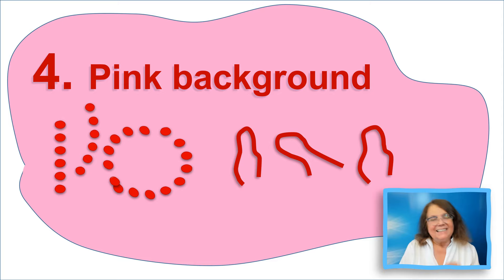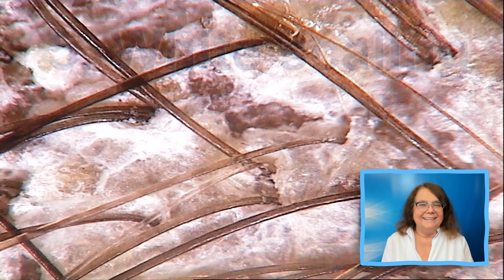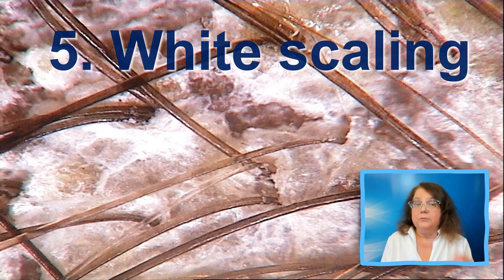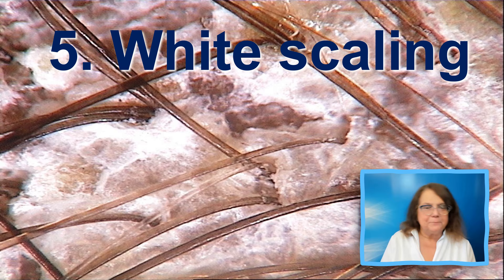Number four: the pink background. Unlike many other inflammatory diseases of the scalp, in psoriasis the background is almost always pink in color. Number five: diffuse scaling. These may be very thick or sometimes just thin scales. They are usually silver-white in color, sometimes a little bit yellowish.